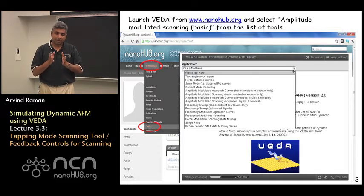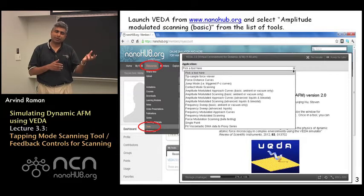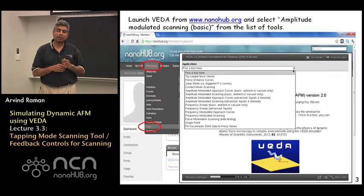So we have to worry about two feedback parameters proportional and integral. Just the way we did contact mode scanning in part one, we are going to focus more on the integral controller.